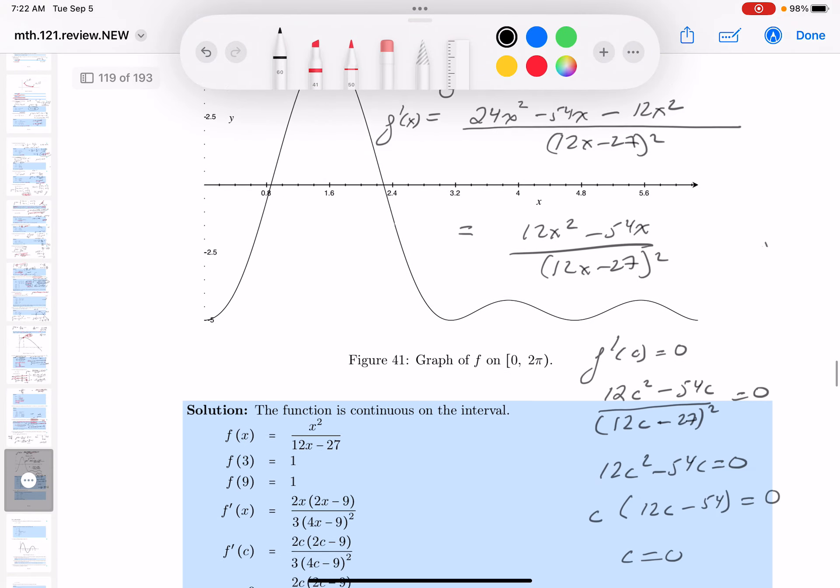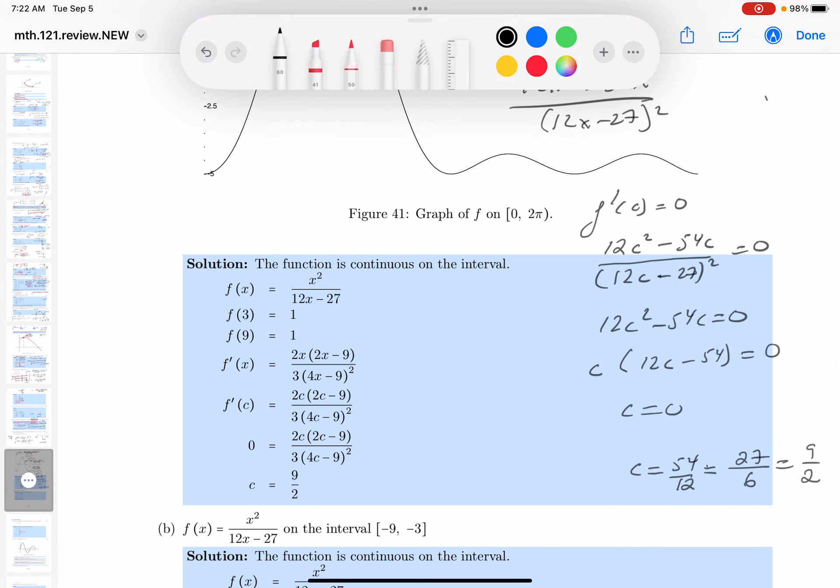And I verified the conditions of Rolle's theorem. So let's take a look at it. See how we're doing. I wrote this down over here. I put the derivative down. I evaluate the derivative at c. And then I solve for c. And we got c equals 9 halves. All right?